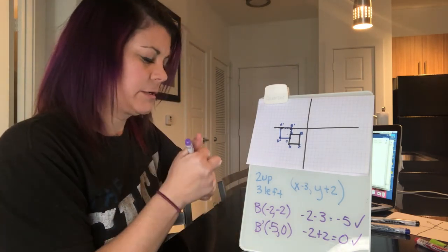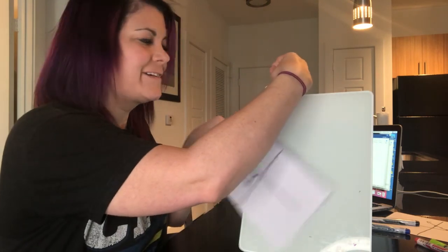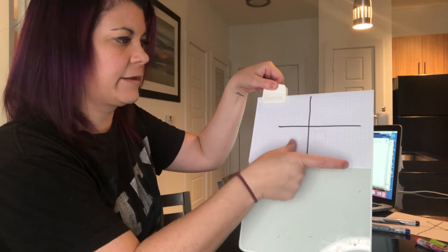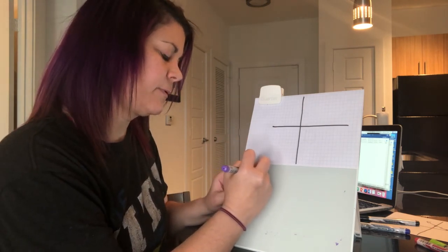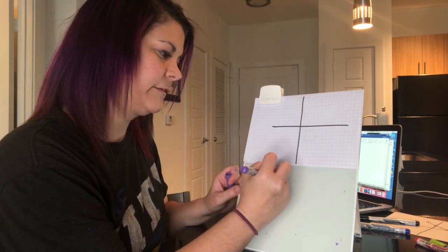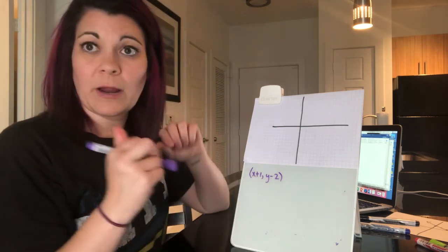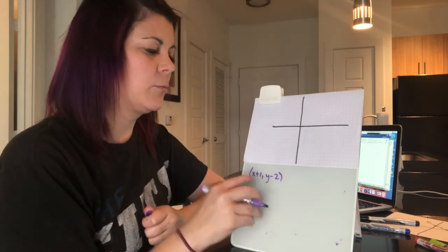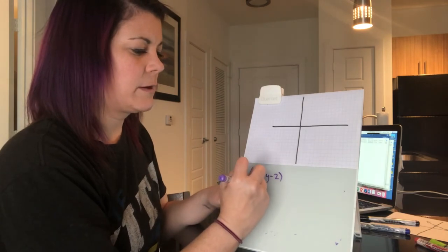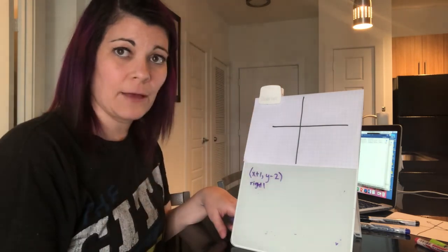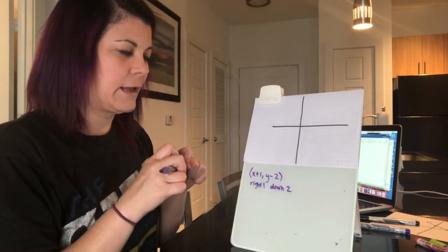Let's do another translation. I'll give you the translation rule, apply it without drawing first, then draw to check. The translation rule is (x + 1, y − 2). x + 1 means right one, because x is left and right and plus means right. y − 2 means down two, because y is up and down and minus means down.